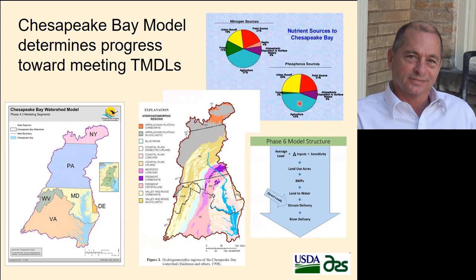A little more than 40 percent of the phosphorus getting to the Chesapeake Bay is also coming from agriculture. After listening to the heavy emphasis on nitrogen in the Midwest, the Chesapeake Bay is an estuary — water comes in from the Susquehanna River, stays fresh through much of the bay, then turns brackish and almost fully saline before exiting into the Atlantic Ocean. Nitrogen is a limiting element in saline water, but phosphorus is a limiting nutrient in freshwater, so we have a lot more emphasis on both.